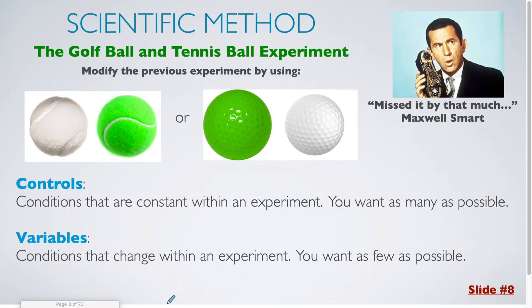The answer is the difference between controls and variables. A control is a condition which is constant within an experiment, and ideally you want to have as many controls as possible. An example of a control that I did have in the experiment was the fact that there were both balls. One was a golf ball, one was a tennis ball, but the fact that there were balls was a control. A variable is a condition that changes within the experiment, and ideally you want as few as possible. It should be the thing you were testing.